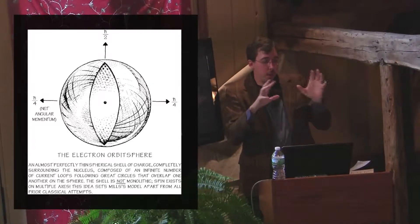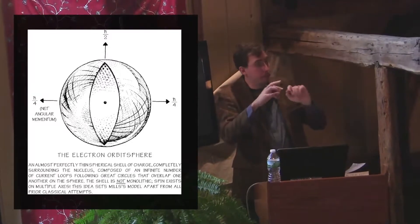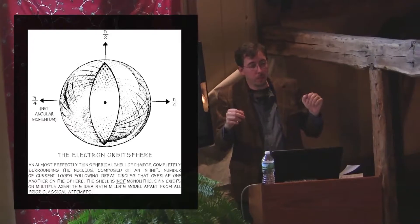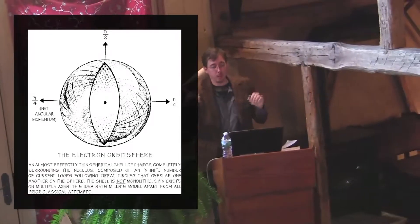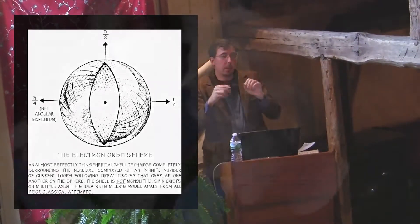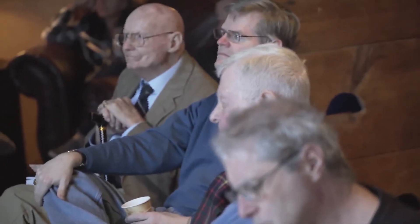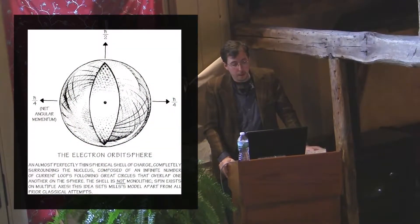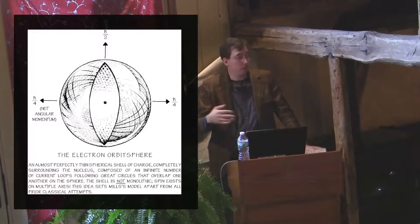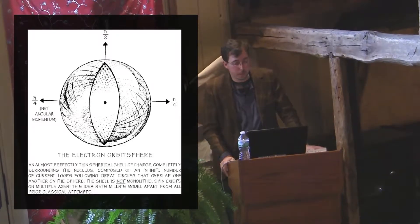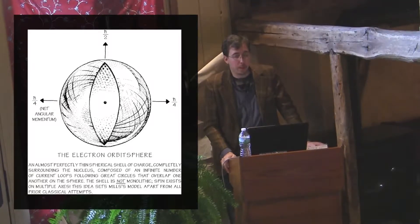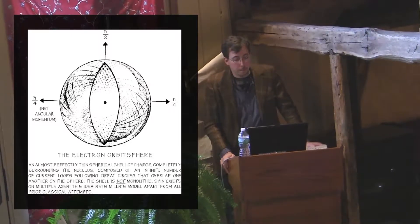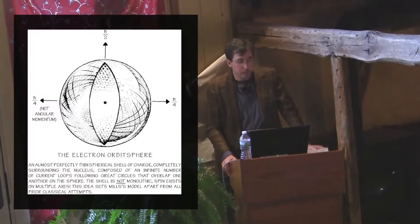Suddenly you have this very strange object: a spherical shell of charge completely surrounding the nucleus. The whole atom is neutral because the proton is positively charged and the shell is negatively charged. Outside that shell you don't see any charge. But it's not a monolithic sphere, because every point on that sphere is traveling along a different trajectory. There's all these rings of flowing current on the surface of the sphere that allow the whole sphere to be in force balance and allow it to have angular momentum.